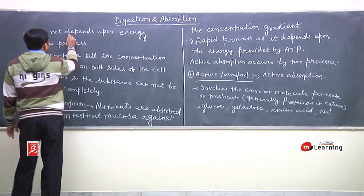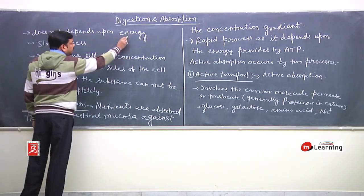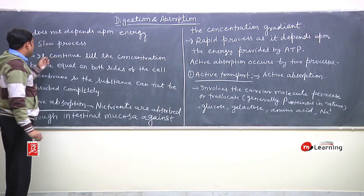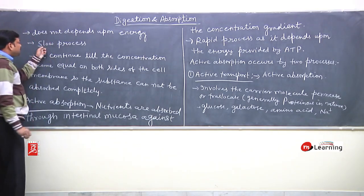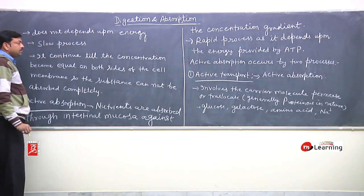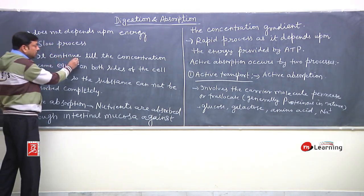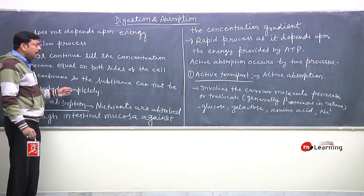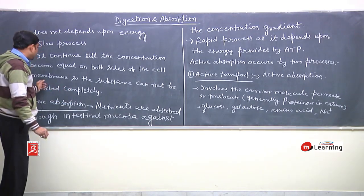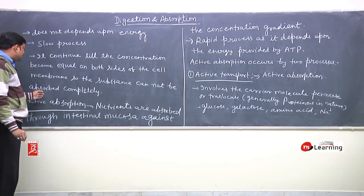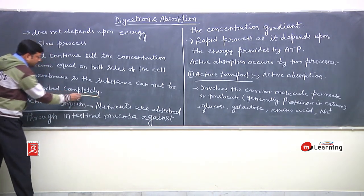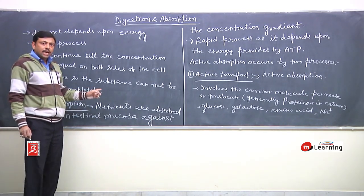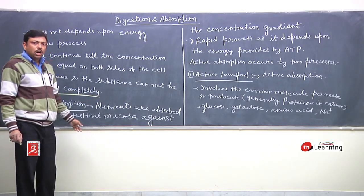Passive absorption does not depend upon energy. Passive absorption is a slow process. Passive absorption continues until the concentration becomes equal on both sides of the cell membrane, so substances cannot be absorbed completely in passive absorption.